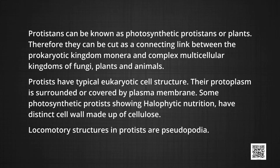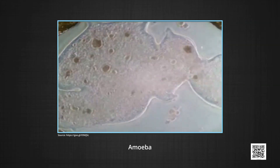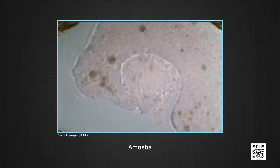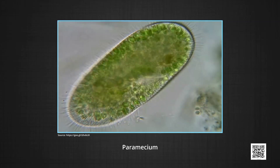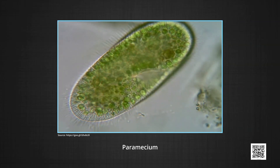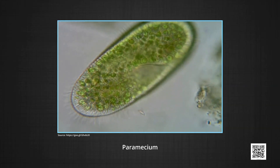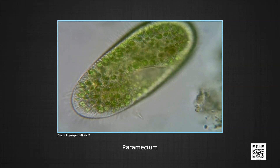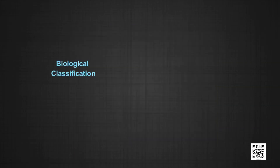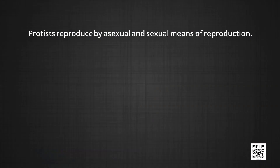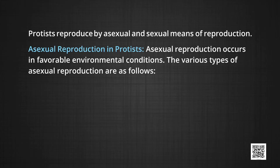Locomotory structures in Protists include pseudopodia like in amoeba, flagella like in Leishmania, and cilia like in Paramecium. The photosynthetic Protists are present on the surface of water bodies and known as phytoplankton. They are major supporters for the balance of the ecosystem as they fix the maximum amount of CO2 in the biosphere. Protists reproduce by both asexual and sexual means. Asexual reproduction occurs in favourable environmental conditions.